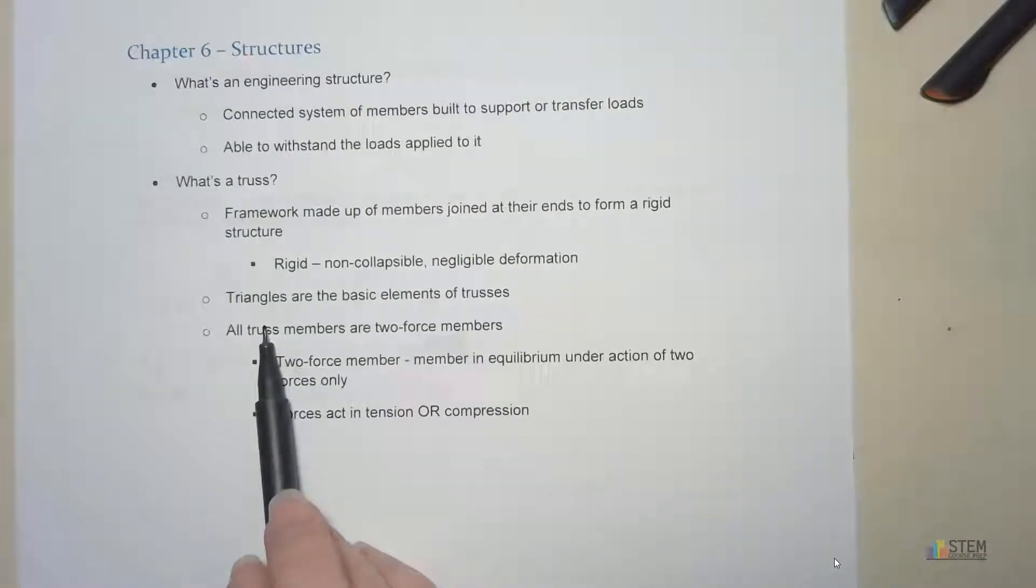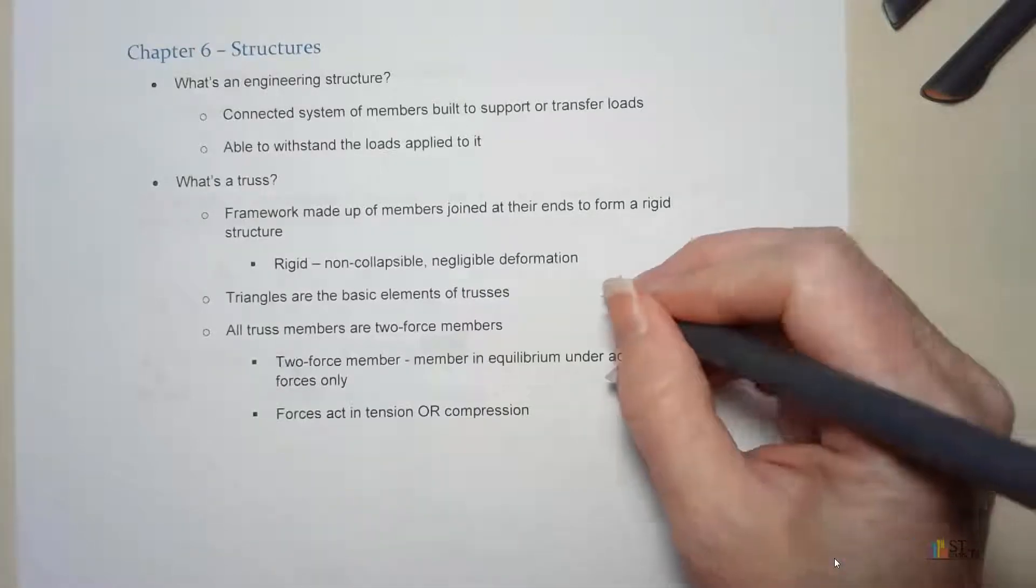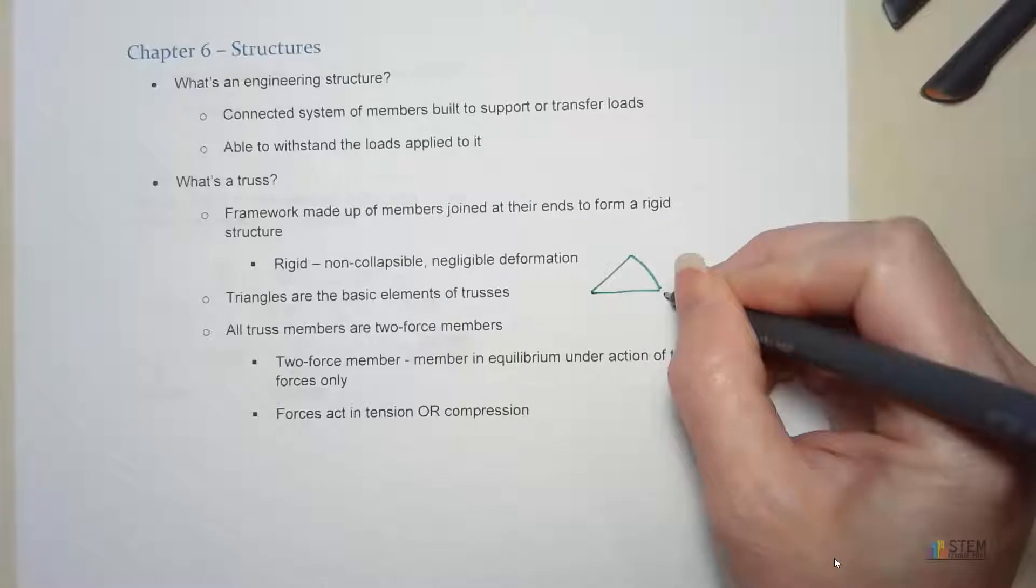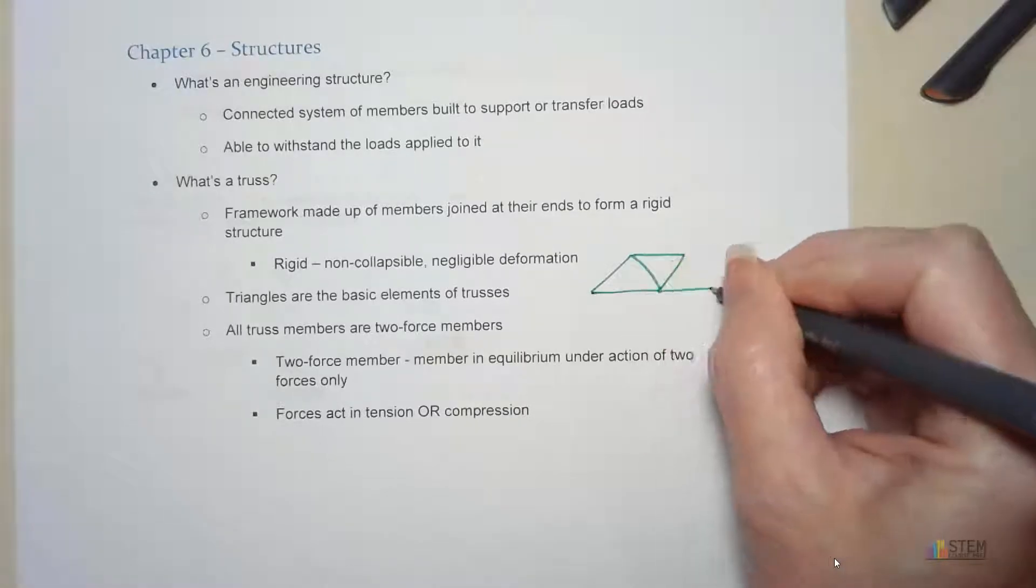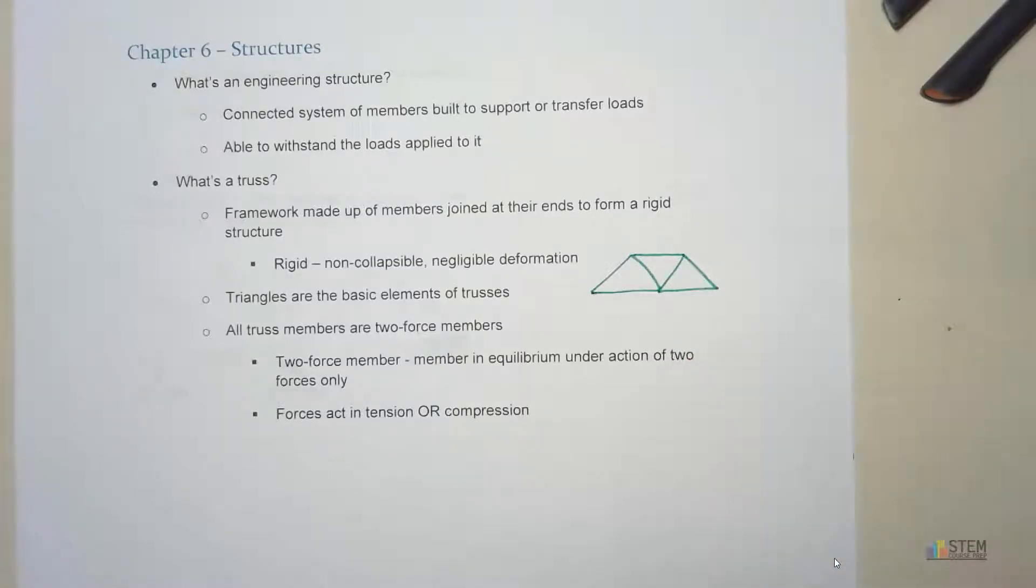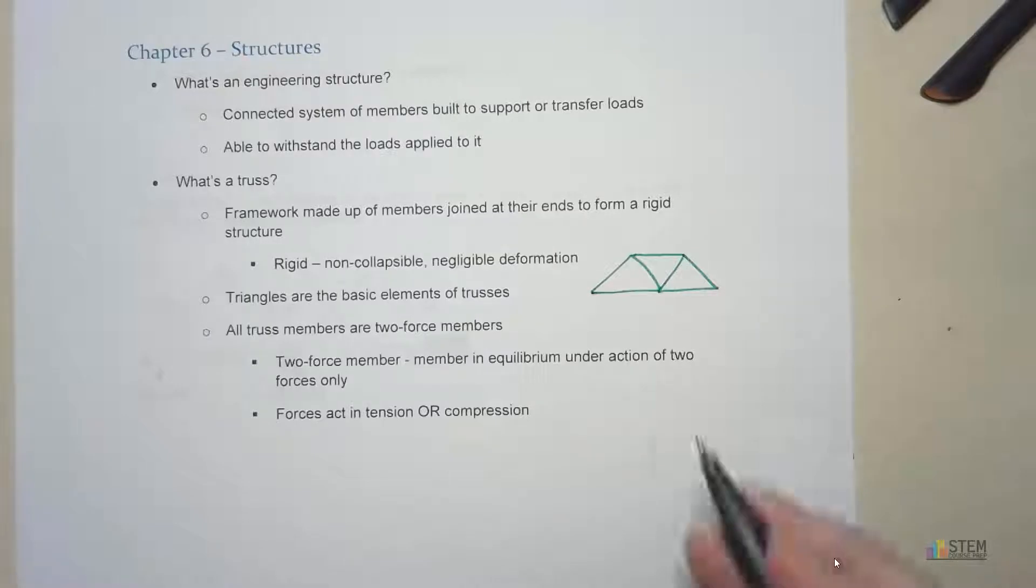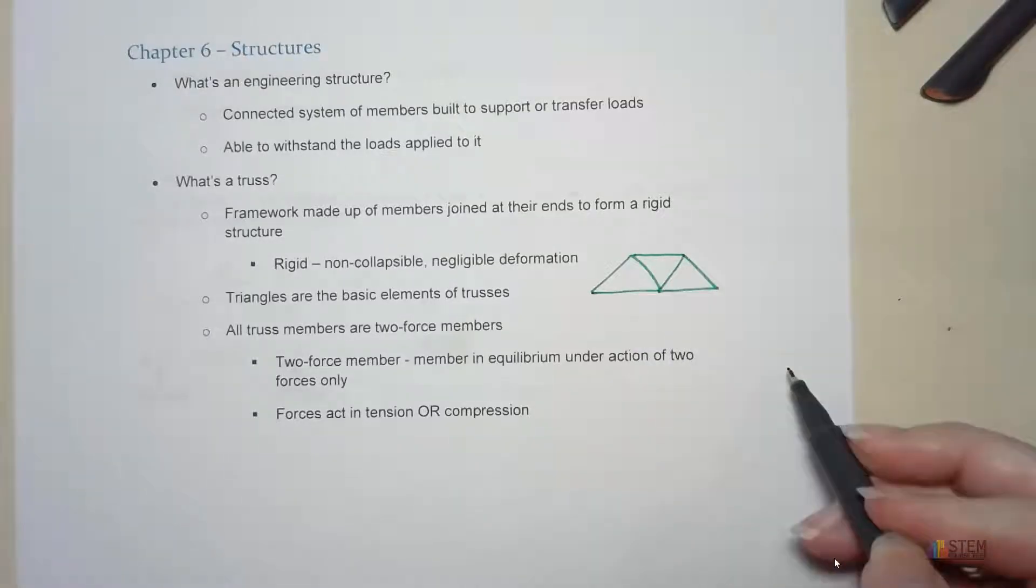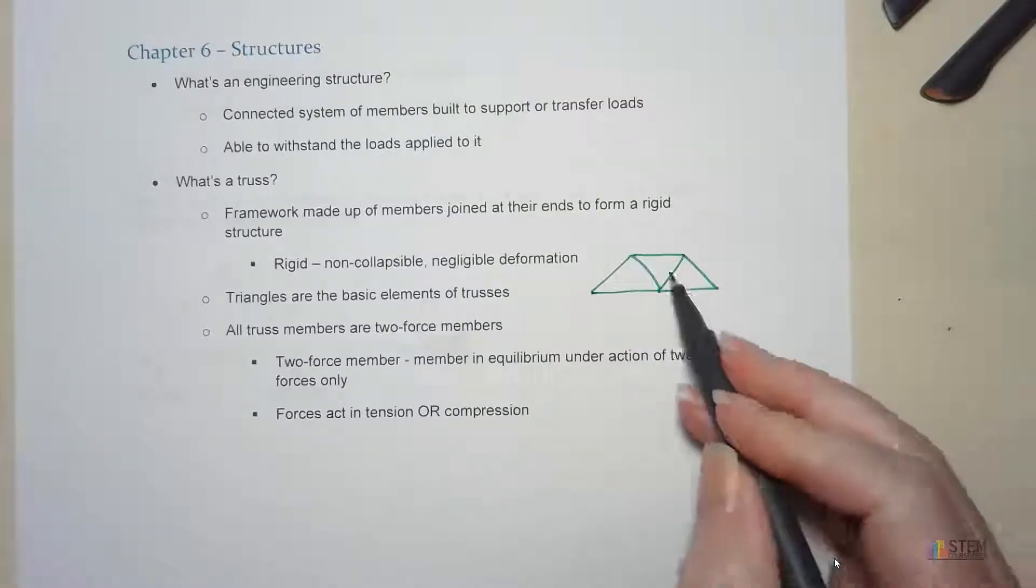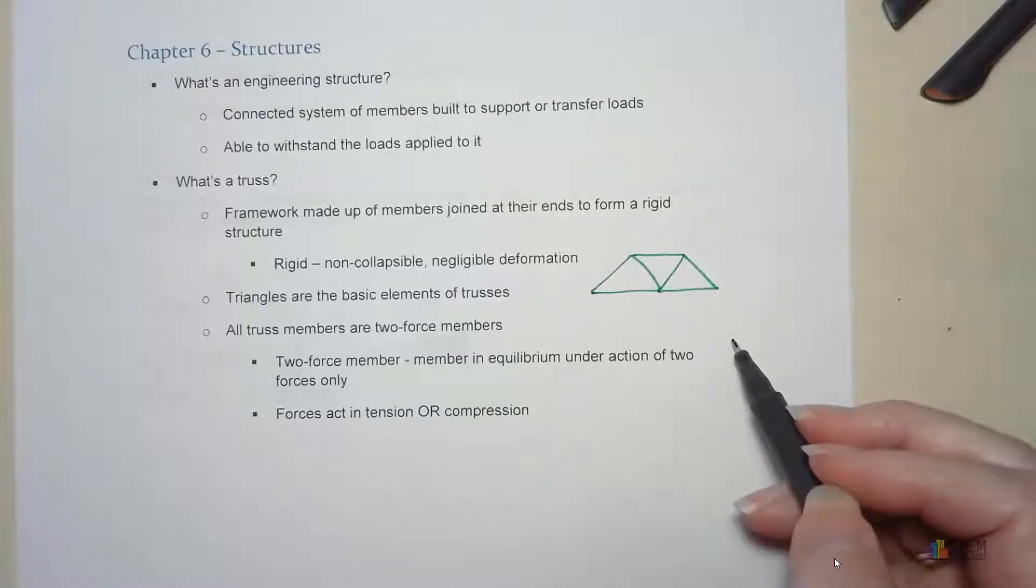Now triangles are going to be the basic elements of trusses. So if you've ever been over a bridge, for example, you've probably seen something that looks like that. That is a truss. Notice it's got the three triangles here. Triangles are our basic elements of trusses.